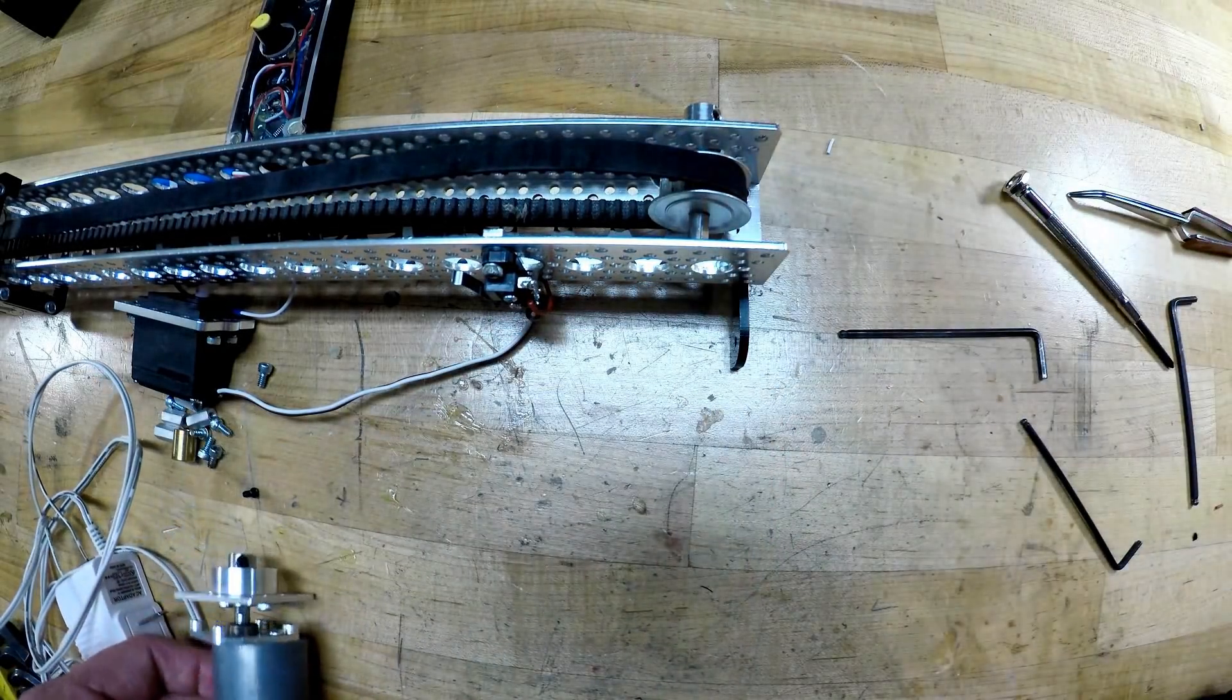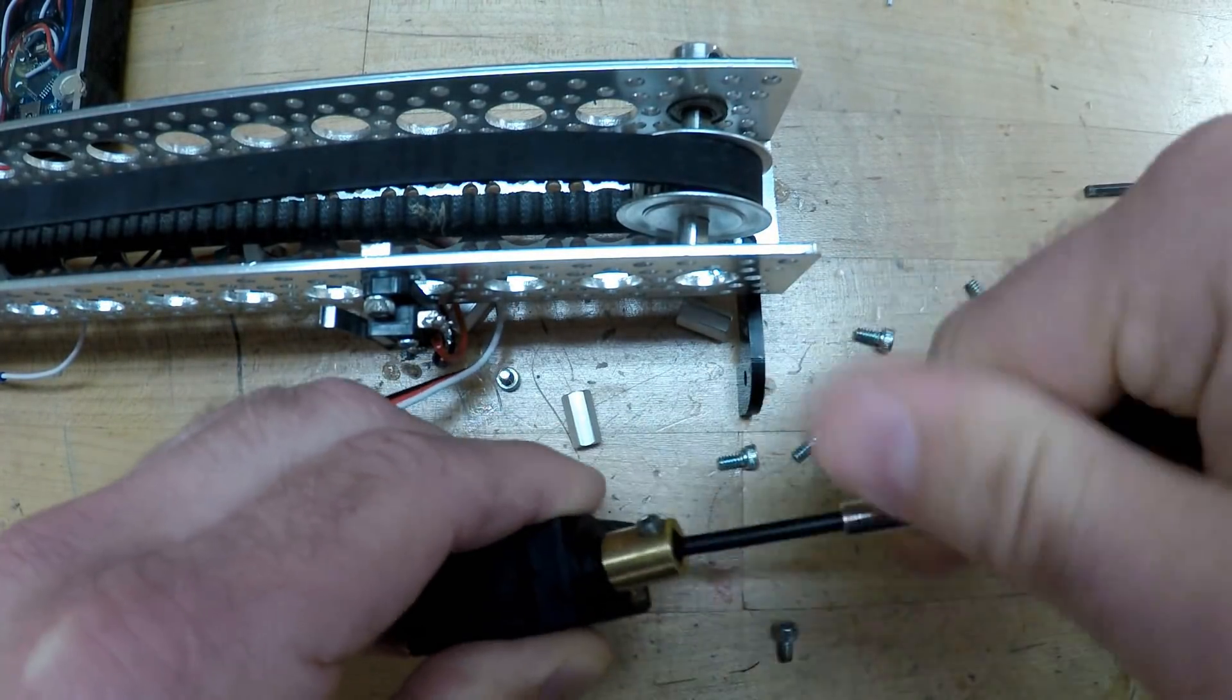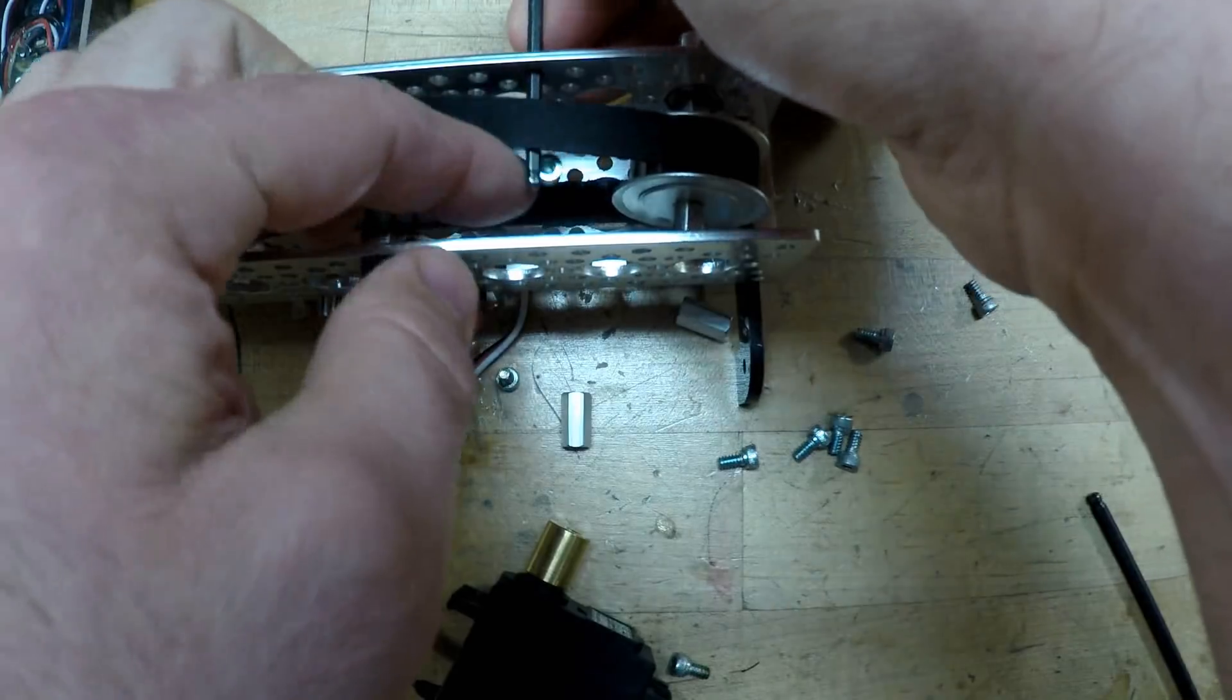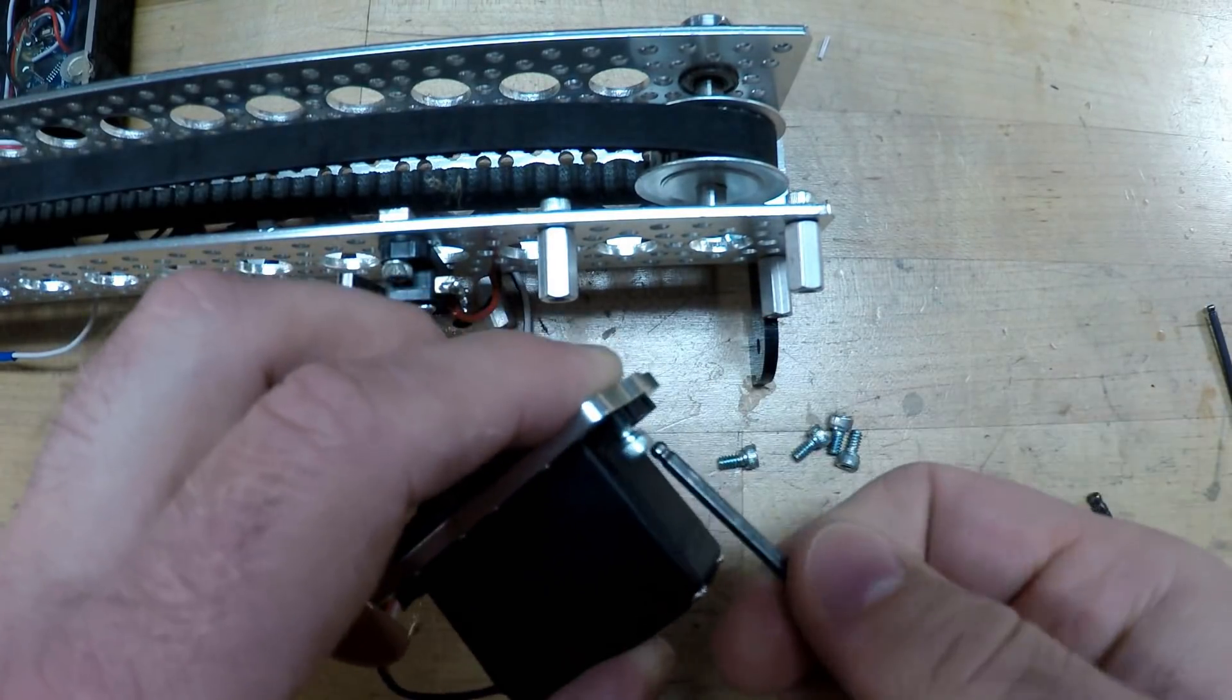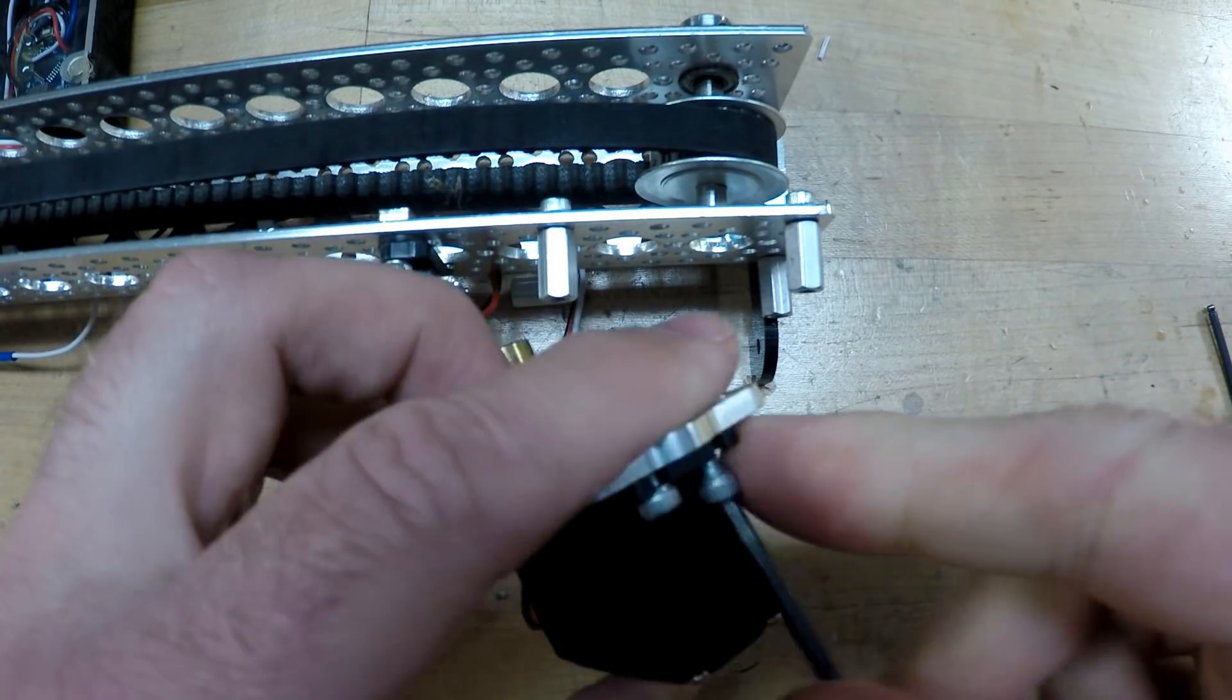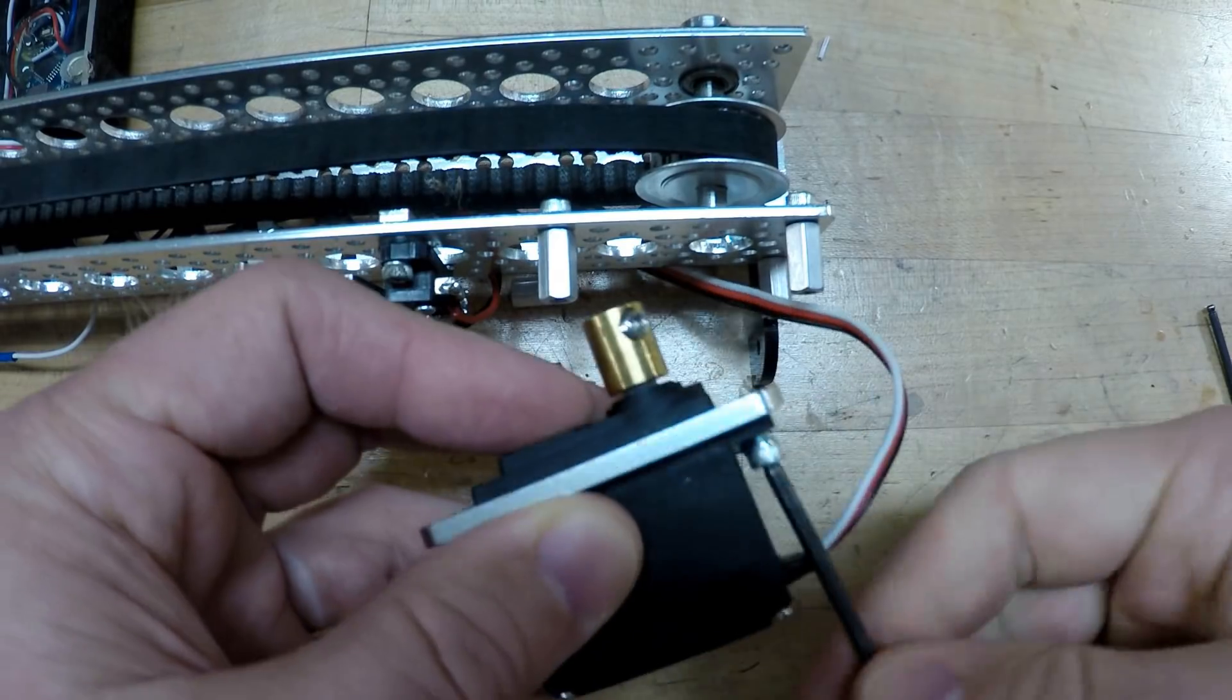So I took out the DC motor and instead I put on a modified servo, a continuous rotation servo motor. Not really a servo anymore but that's an argument we can have later I guess. So putting that on there, the servo plate, the adapter and everything else worked out pretty nicely.